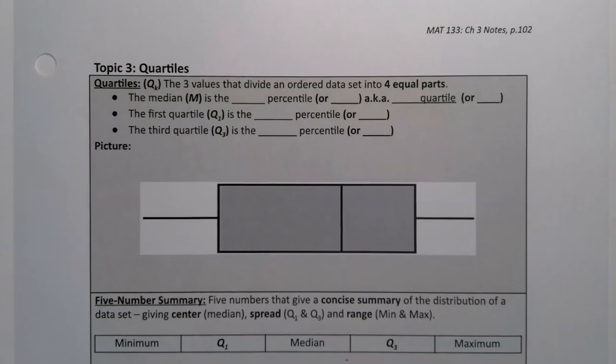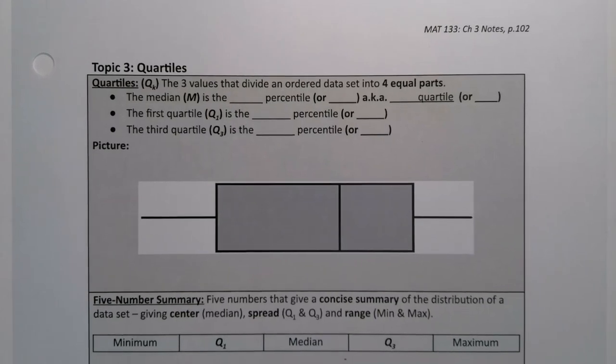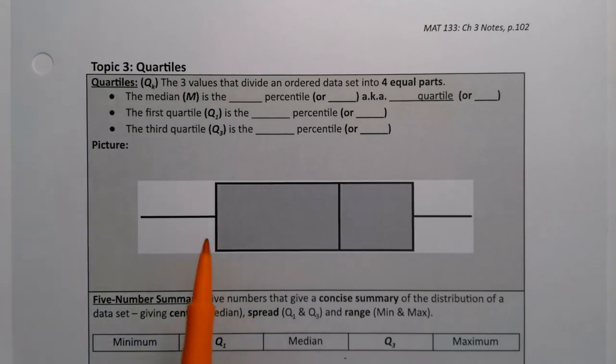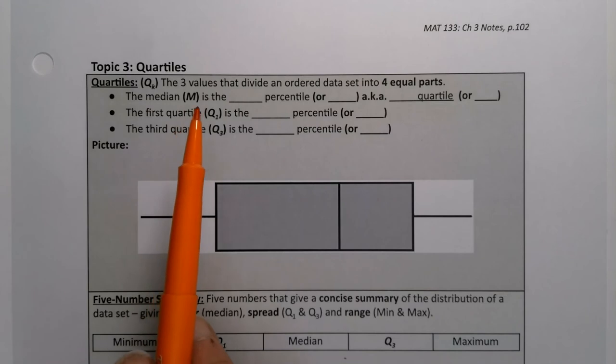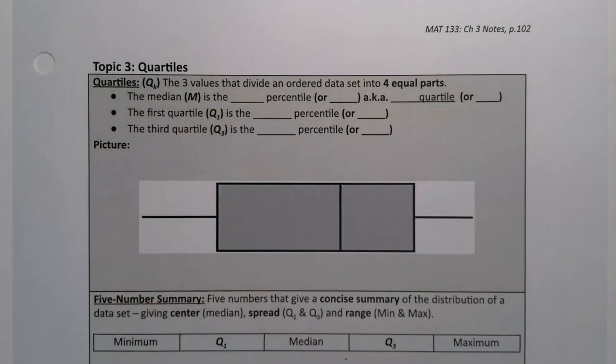There are three special percentiles that are so special that we give them their own names. They're called quartiles. So the quartiles are the three values that divide your data, an ordered data set, into four equal parts.